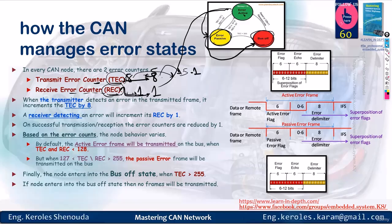If you're in the passive error state, you'll send the first six bits as zeros. Following that, there's the error echo, which means that what you write in the error flag, you rewrite in the error echo. Lastly, the delimiter has two parts with eight ones. This is the error frame.